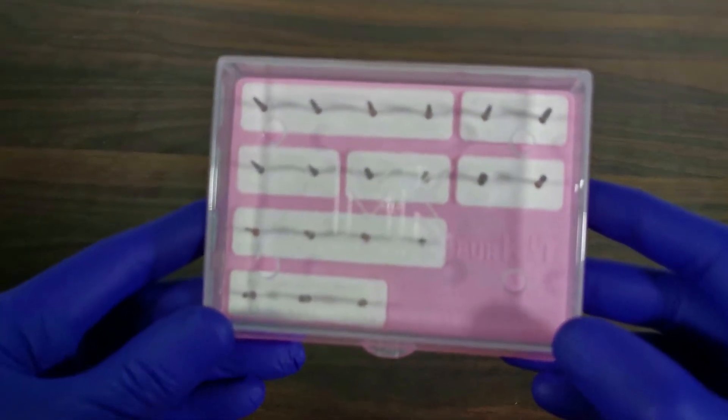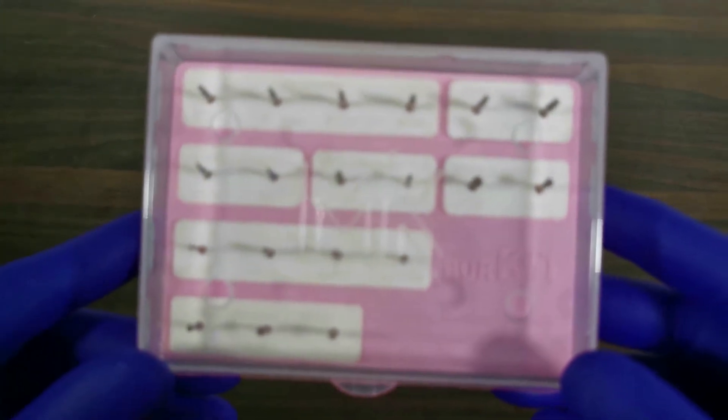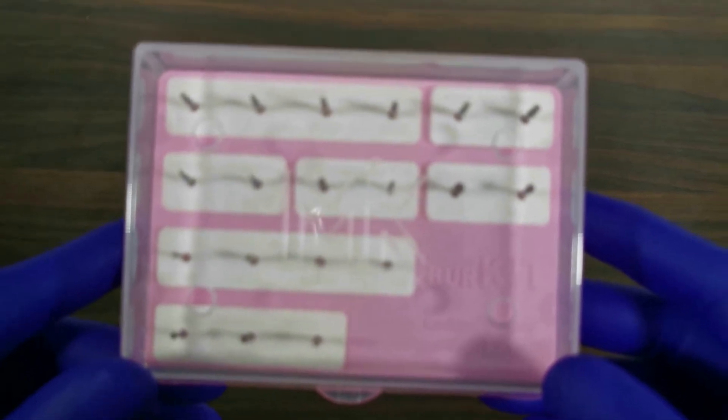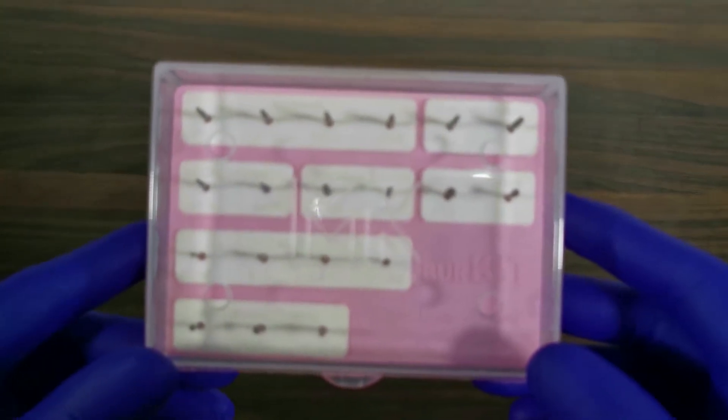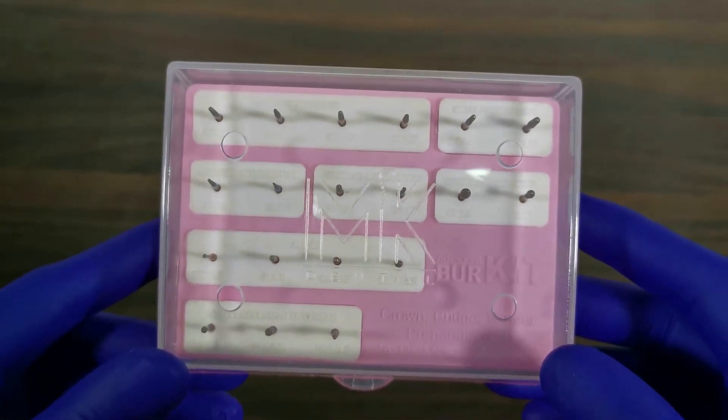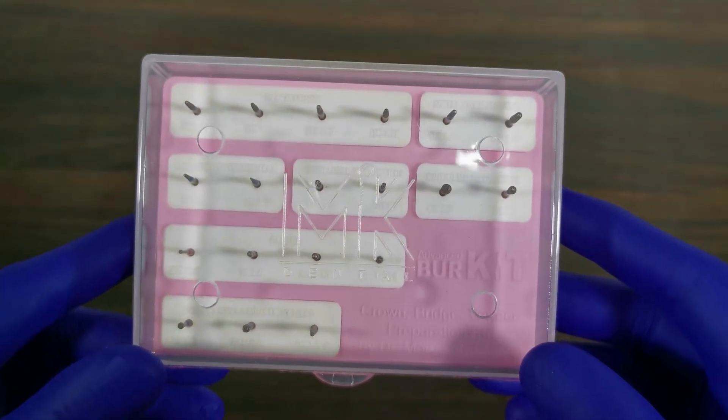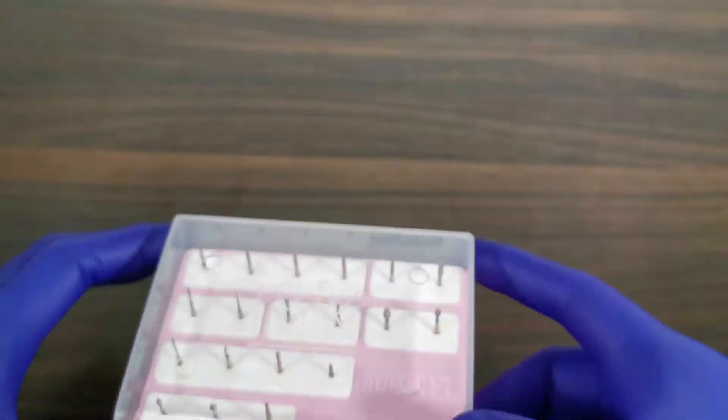For ease of recognition and communication, the burrs are named on the basis of either their tip design, e.g. MS for modified shoulder, DC for deep chamfer, etc., or on the basis of their function, e.g. OR for occlusal reduction, IR for incisal reduction, etc.